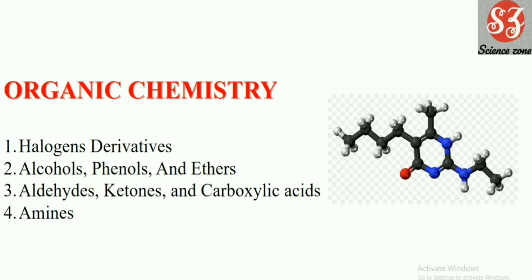Then comes organic chemistry, full of mechanisms. Don't get afraid, it is just like a game. These chapters include halogen derivatives, alcohols phenols and ethers, aldehyde ketones and carboxylic acids, and amines. These are the four chapters of organic chemistry. These chapters all have the same pattern which you have to follow.